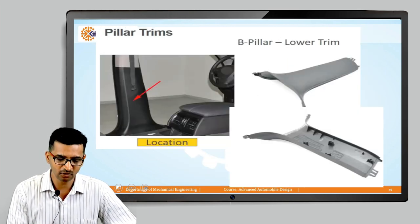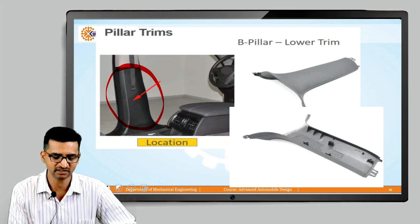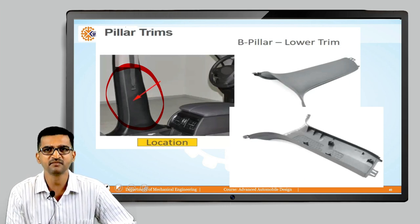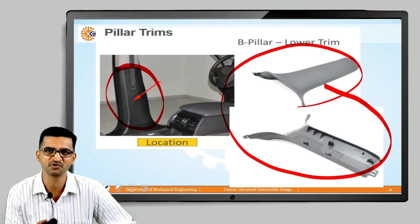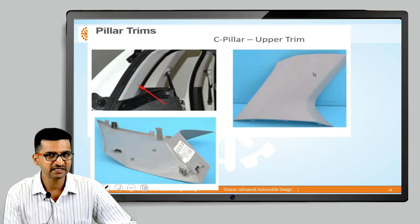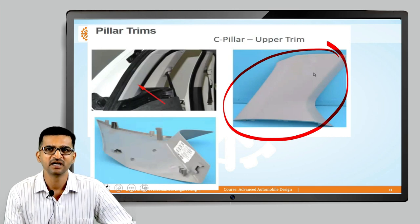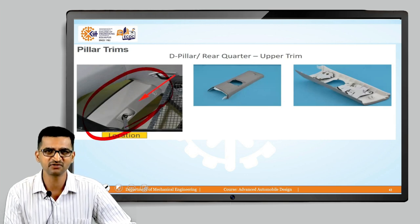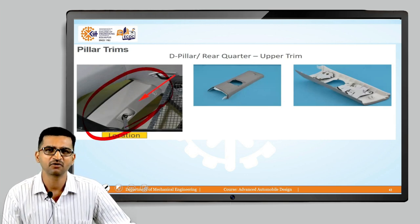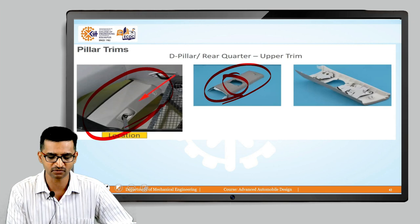The B pillar lower trim is on the lower side of the B pillar. Normally seats are positioned there so it is not directly visible. Similarly, there is C pillar upper trim, and if the car has a D pillar, there will be D pillar trim as well. D pillars are found only in larger cars like SUVs — sedans, hatchbacks, and crossovers typically do not have a D pillar. All these pillar trims also include openings for seat belts.